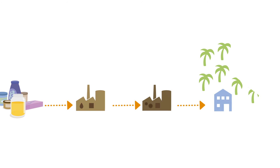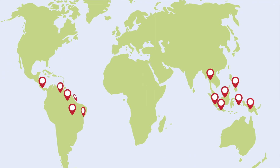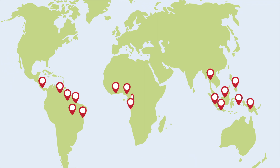Therefore, traceability is a tool to help companies along the palm oil supply chain to identify the origin of the oil sourced. Knowing the potential mills and their locations makes it possible to identify and monitor if sustainable practices are adopted at origination.